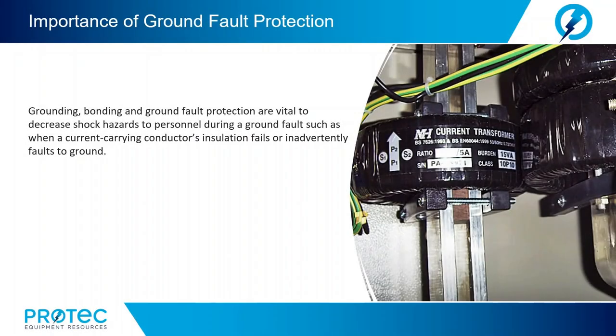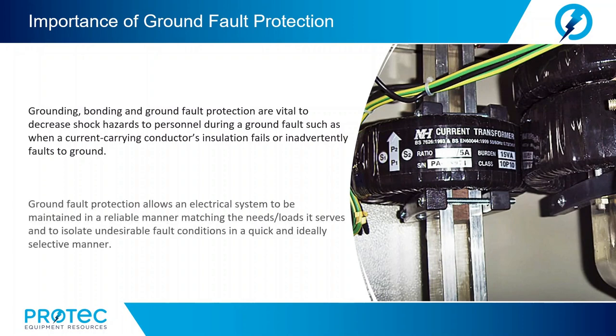While the more powerful three-phase or arcing faults receive a large amount of attention when discussing electrical system protection, ground faults present a far more common and potentially more dangerous occurrence for personnel and equipment. Grounding, bonding, and ground fault protection are vital to decrease shock hazards to personnel during a ground fault, such as when a current-carrying conductor's insulation fails or inadvertently faults to ground. Ground fault protection allows an electrical system to be maintained in a reliable manner, isolating undesirable fault conditions quickly and selectively.